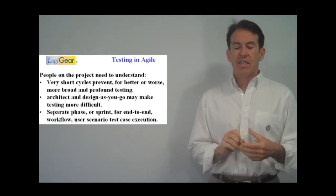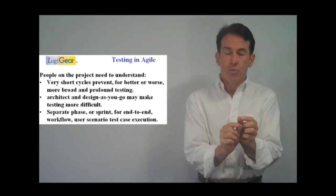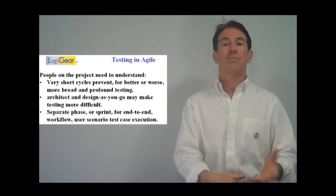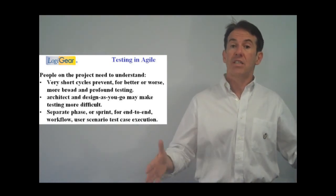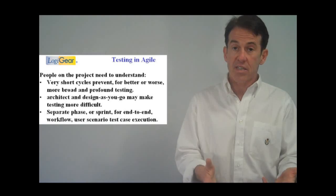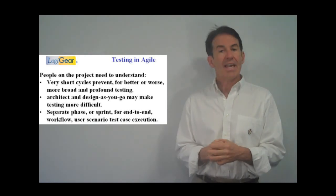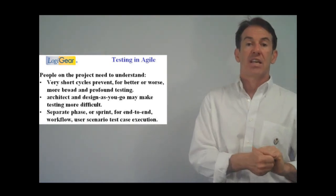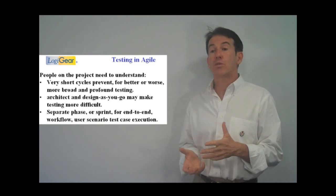People on the team also need to understand that these very short cycles is going to prevent us from doing the breadth and depth of testing that we used to do. It's going to be much more narrow and much more focused, but we will just never achieve that even if it's redundant, even if some of it was wasted, even if some of it had to be repeated because of functional changes in longer development projects, we could just get a whole lot more testing done. Now that testing is so much more compressed, we're just not going to get the depth and breadth of testing coverage that we used to. But also, with design-as-you-go styles of development, testing might be more difficult. There could be, in subsequent sprints, changes to the design that invalidate the testing that I did in a previous sprint that I may just not get to test very thoroughly because we just don't have the time in this compressed cycle.